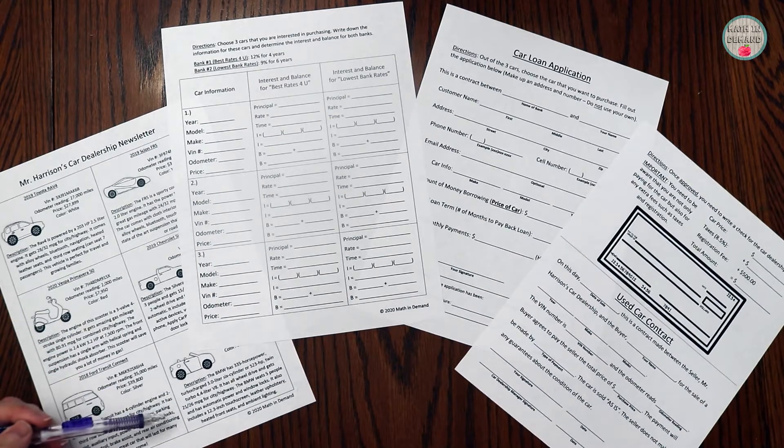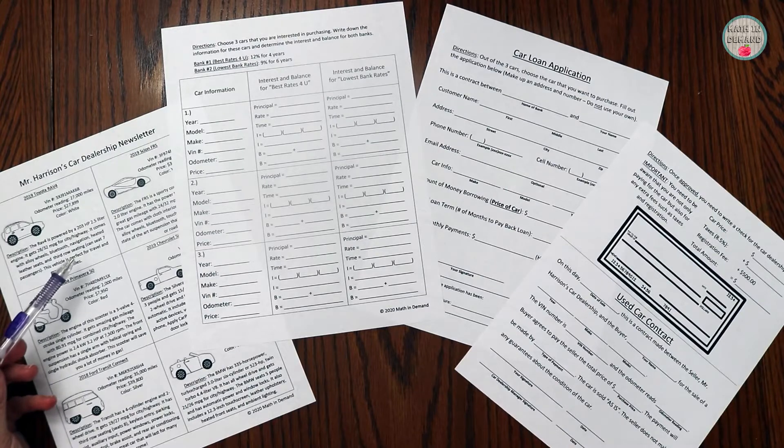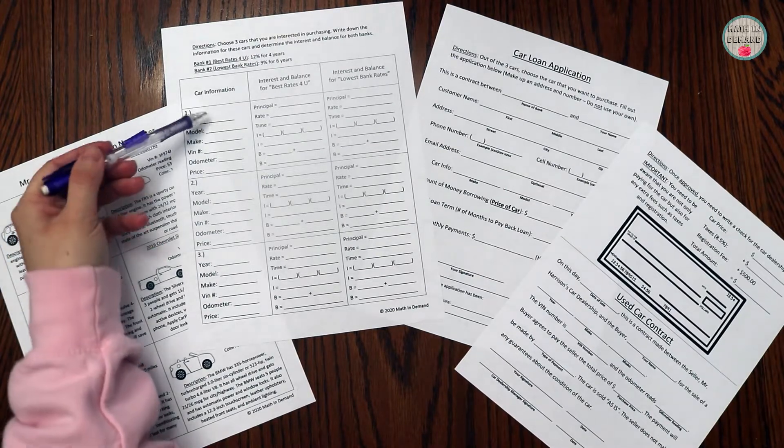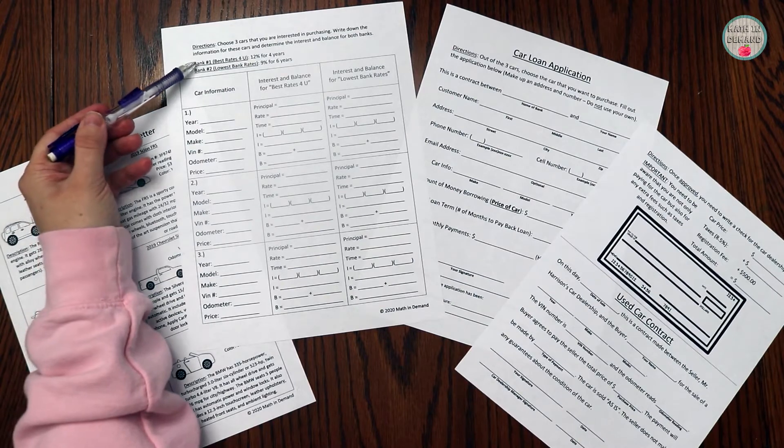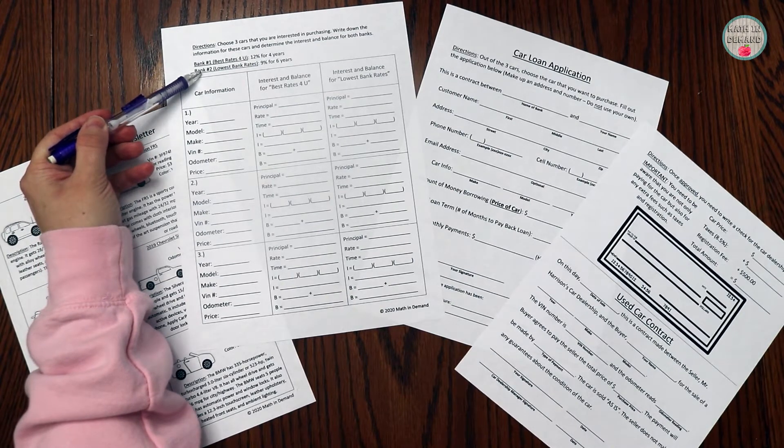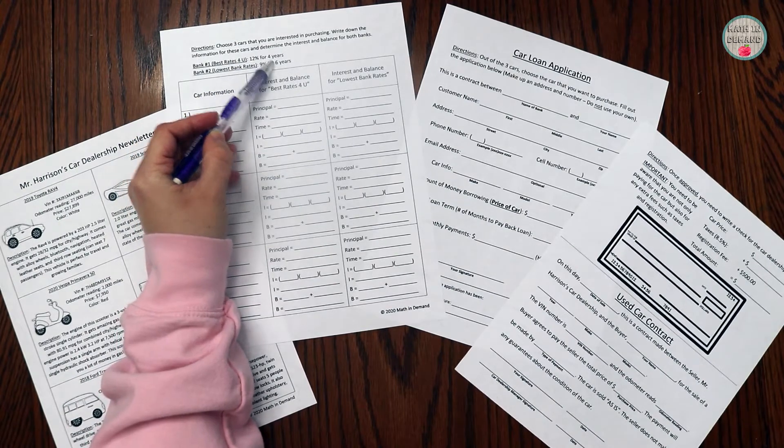Out of those six cars, students will pick three of the cars that they prefer. They will fill out the car information and then they are also given two banks that have information about a loan for the percent and for the time.